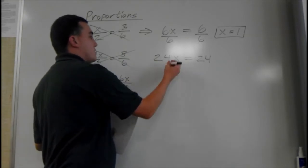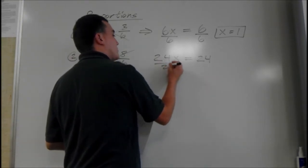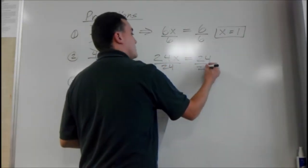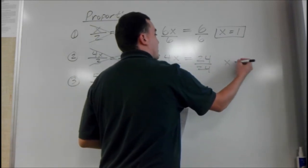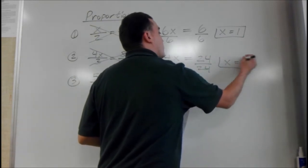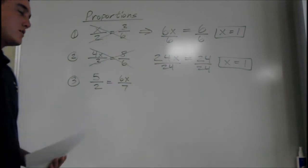So 24 times x. We have to divide by 24 on both sides. And it happens to be 1 again. These are just quick and easy examples to show you what cross multiplying is.